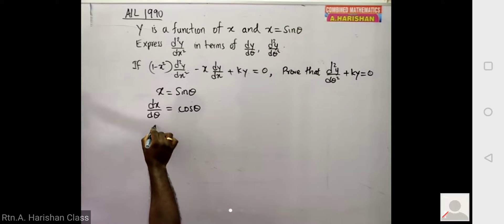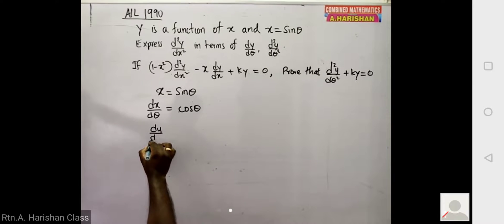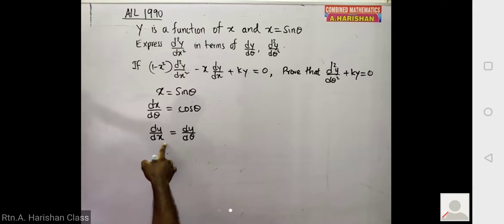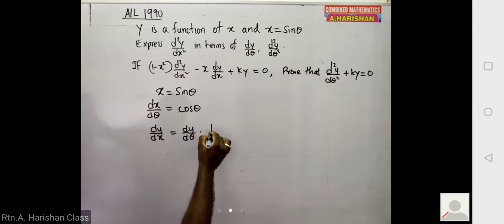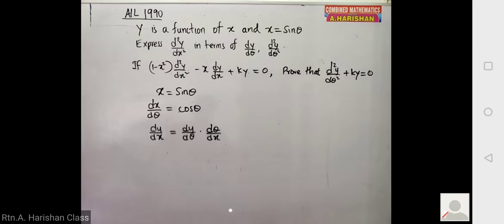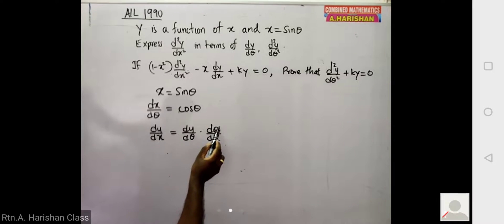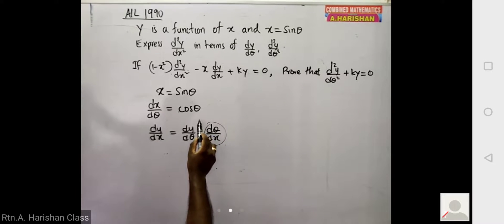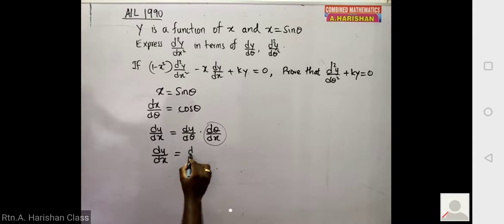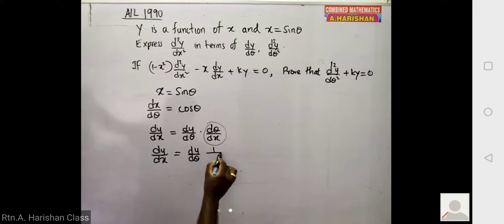Using the chain rule, dy/dx equals dy/dθ times dθ/dx. Since dx/dθ equals cos θ, dθ/dx equals 1 over cos θ. So we rewrite dy/dx as dy/dθ times 1 over cos θ.